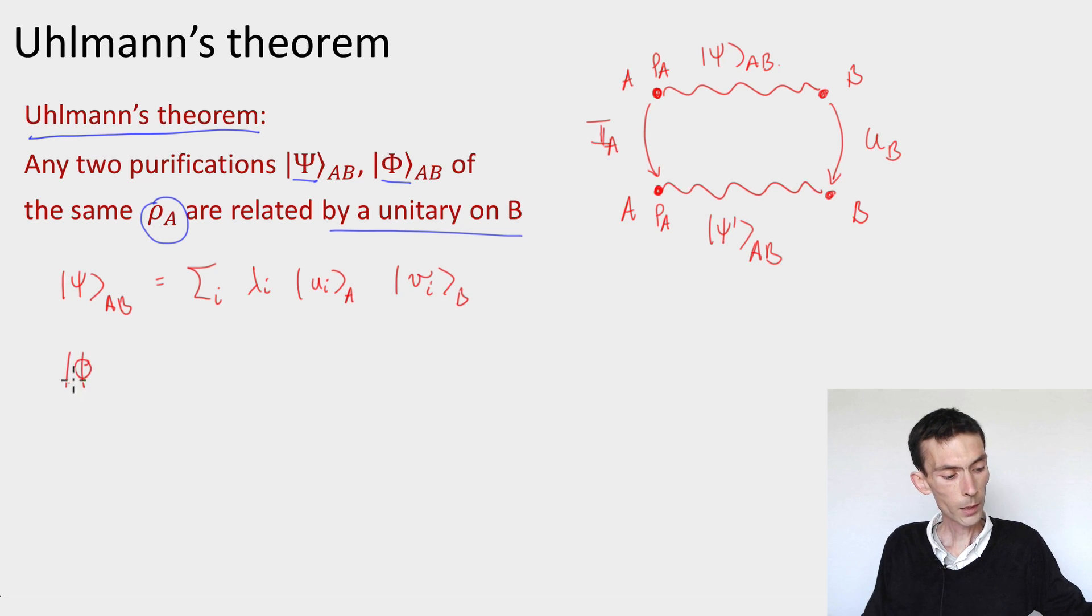Similarly φ_AB, I could write as sum over i of some other coefficients, maybe μ_i, and then I would have |w_i⟩ on system A, and |z_i⟩ on system B.